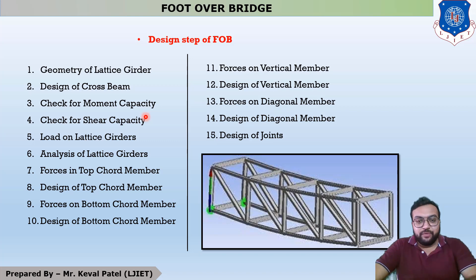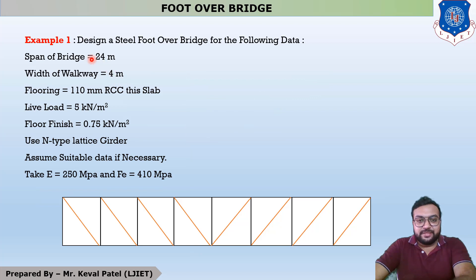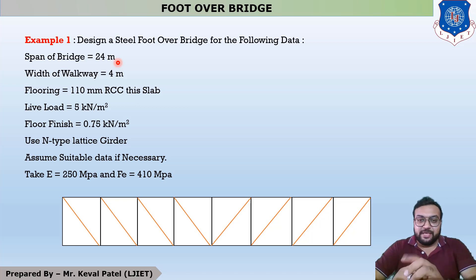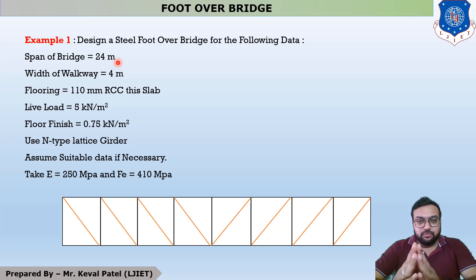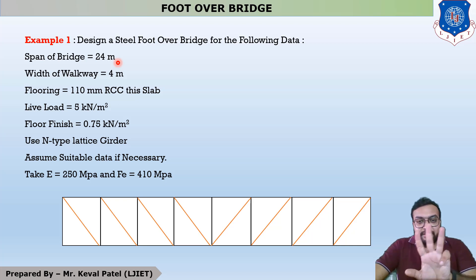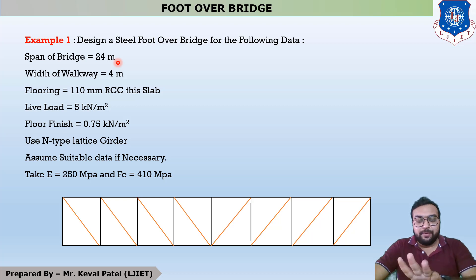Now we are moving to our first example: the design of a foot over bridge. In your syllabus there are two types of foot over bridge — the N-type and the W-type. The W-type is called the Warren type of foot over bridge. One question often asked in your viva is the types of foot over bridge, of which there are three: through type, deck type, and semi-through type.